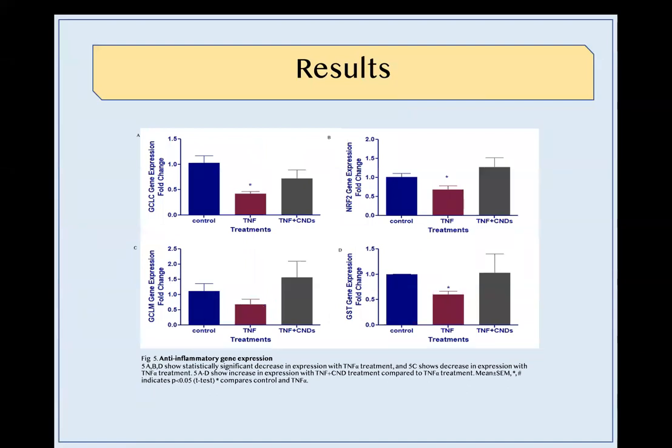In figure 5, we can see the anti-inflammatory gene expression of GCLC, NRF2, GCLM, and GST. There is a decrease in the expression when comparing control to TNF-alpha, and an increase when comparing TNF-alpha to TNF-alpha plus CND. Again, we used a 2-tail T test to determine statistical significance, with the p-value of less than 0.05 being considered statistically significant.